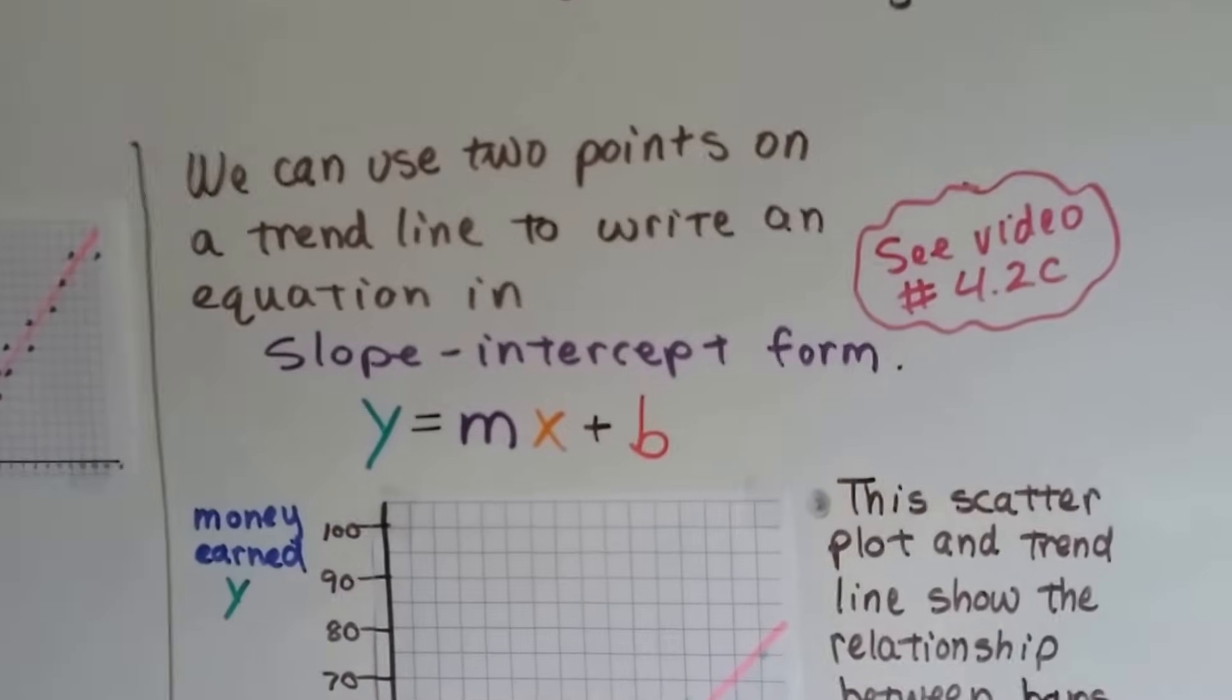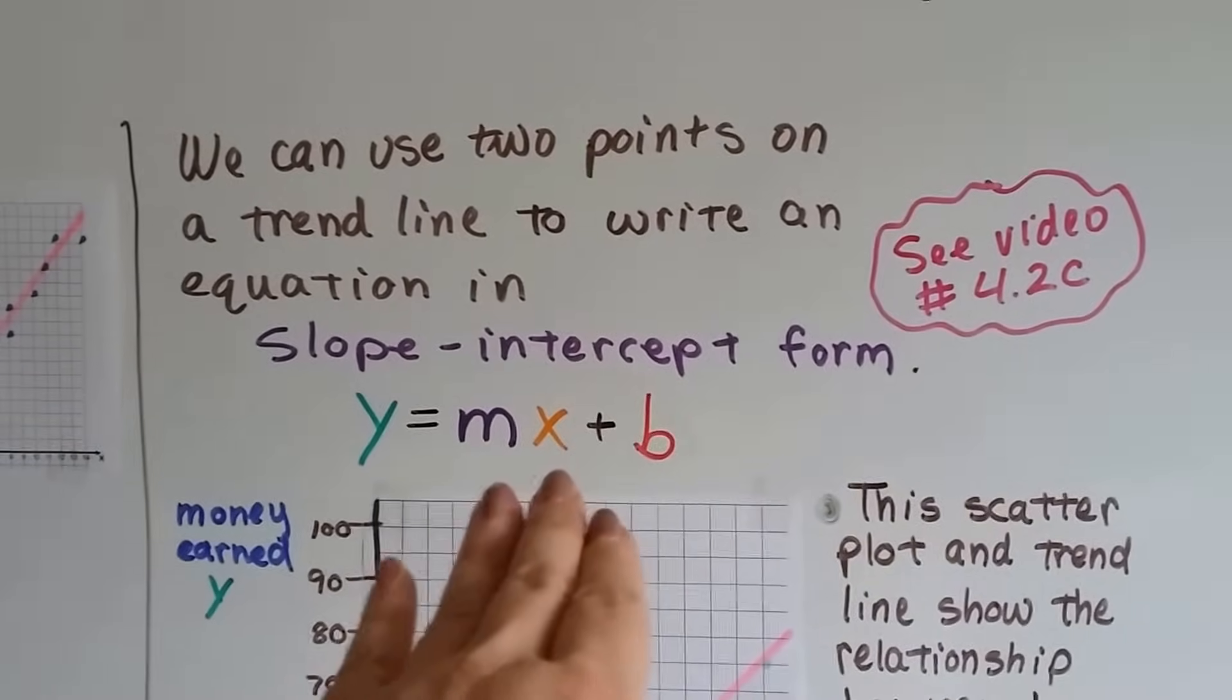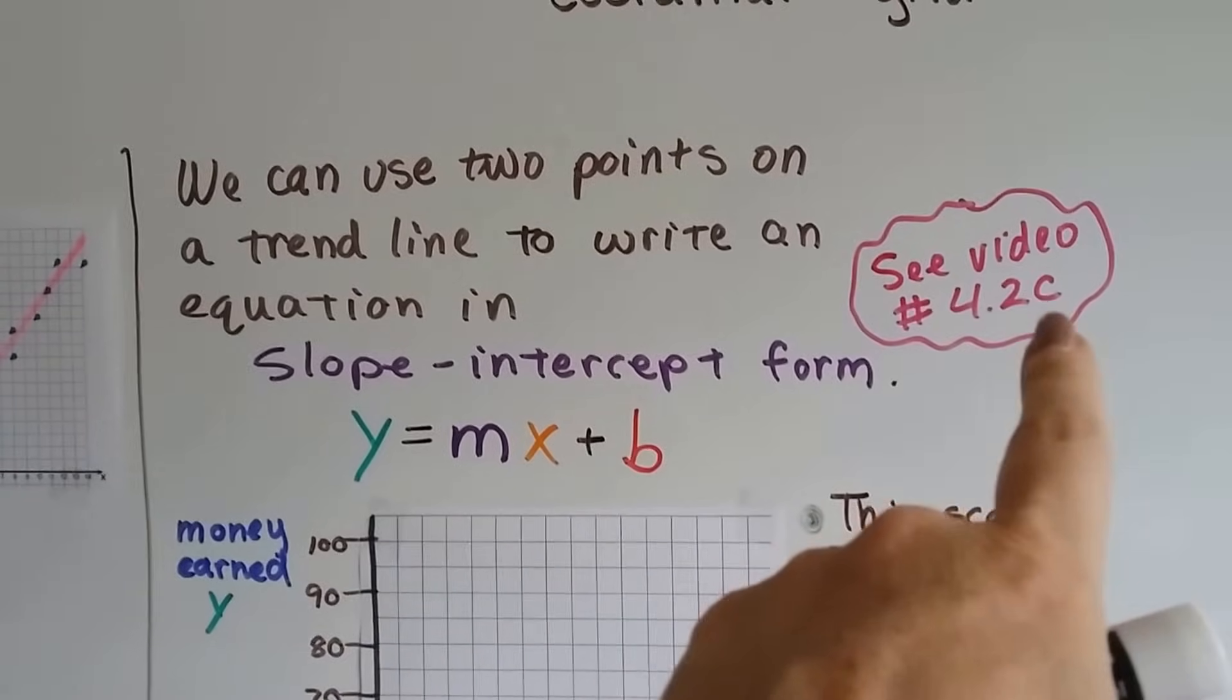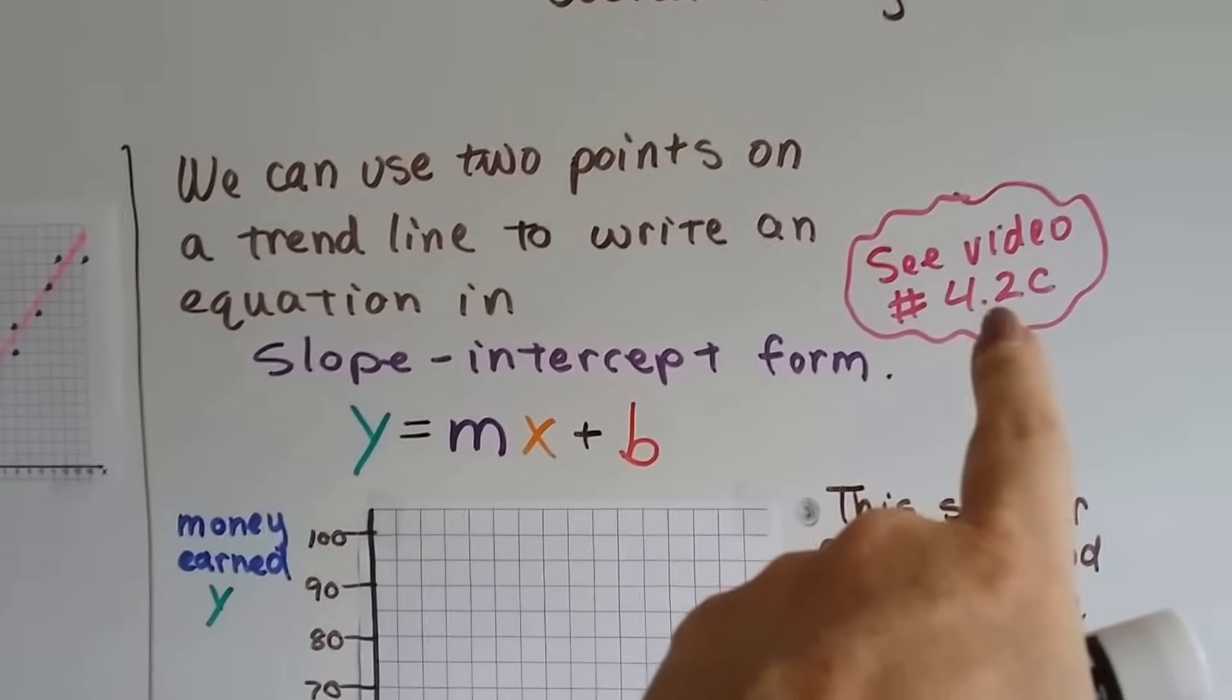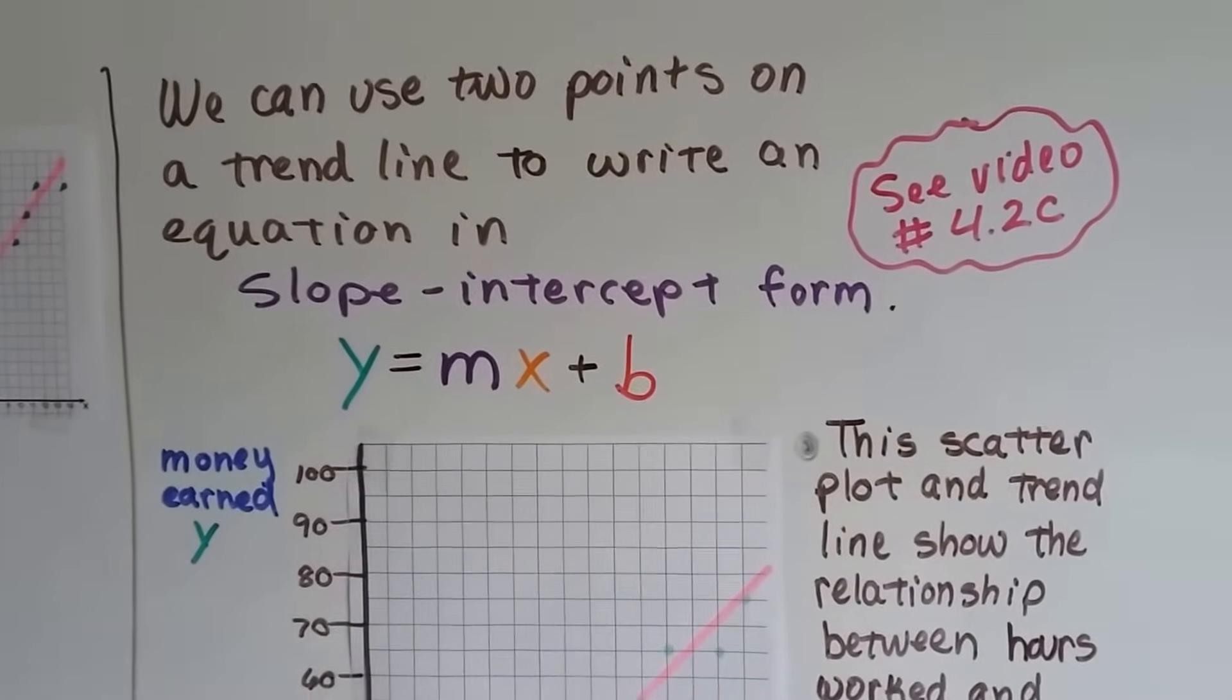So we can use two points on a trend line to write an equation in slope-intercept form. Now if you're lost about this, then you've kind of gotten ahead of yourself. Go back and watch video 4.2c or any of the 4.2 videos ABC. And I'll put a link to this in the description of this video so you can just click on it.